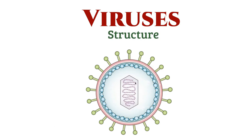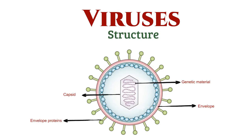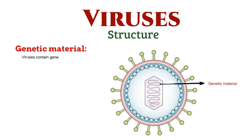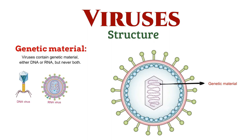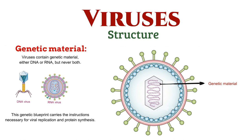A virus consists of the following parts. Viruses contain genetic material, either DNA or RNA, but never both. This genetic blueprint carries the instructions necessary for viral replication and protein synthesis. Depending on the virus, the genetic material can be single-stranded or double-stranded, linear, circular, or segmented.